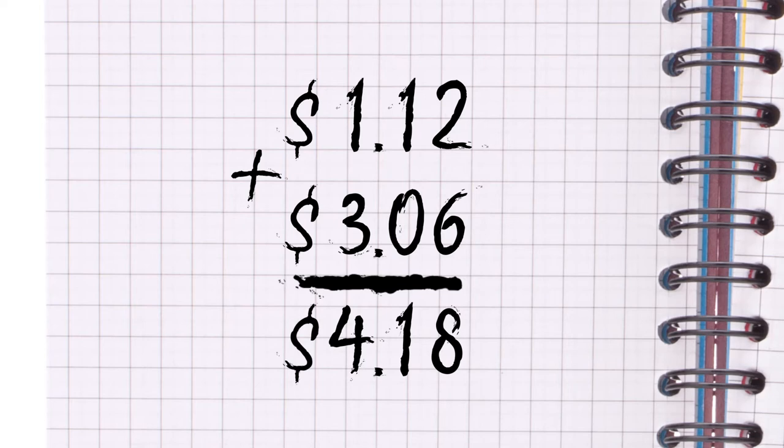Remember, the first number in the answer represents the dollar amount, or $4. The numbers on the right side of the decimal stand for the change, or 18 cents. When you put all the numbers together, you get $4.18.